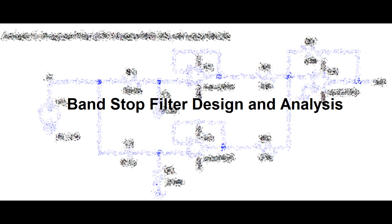Hello guys, welcome back to my channel. Previously I showed how to design a notch filter using a twin-T notch filter configuration and operational amplifiers. In this video I will show you the difference between the notch filter and the band stop filter. The band stop filter is formed by the combination of a basic RC low pass filter with an RC high pass filter.